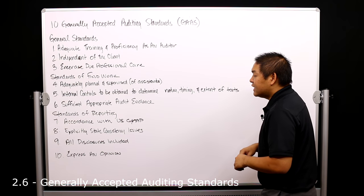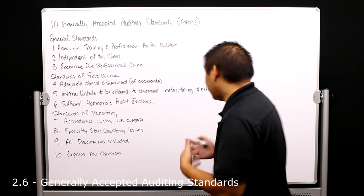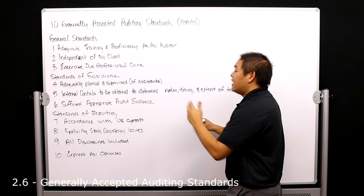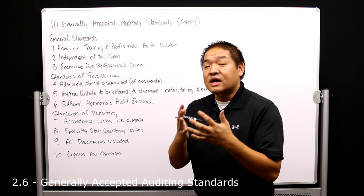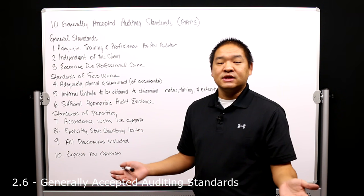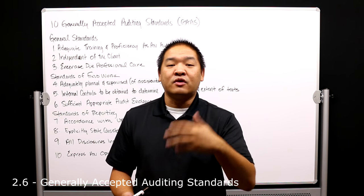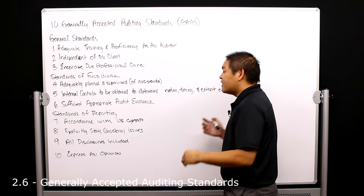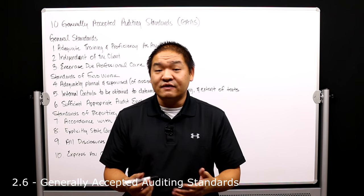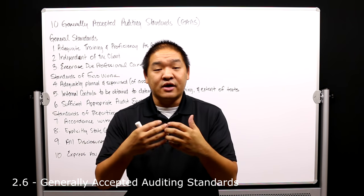The sixth GAAS, or the last standard of fieldwork, is that sufficient appropriate audit evidence is obtained. When we go out and do these tests, we get a sufficient and appropriate amount of audit evidence. Sufficient means we've got enough; appropriate means they're actually relevant to what we're testing. For example, if a client has 20 stores in the United States and we physically attend inventory counts at five of them — 25% — that may be sufficient. Appropriate means going there physically is more appropriate than relying on a report given to us by the organization we're auditing.